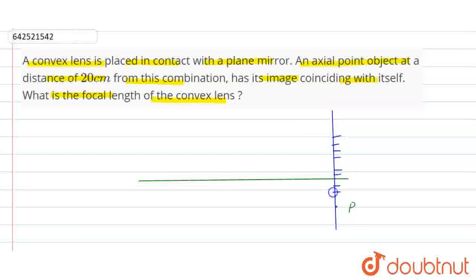And in contact with this plane mirror, one convex lens is there. And here in the question given that one point object is there, the point object. And the distance between this point object to this is how much? 20 cm.